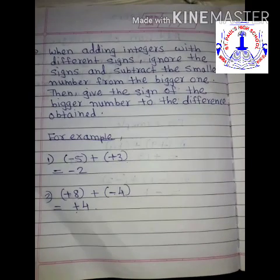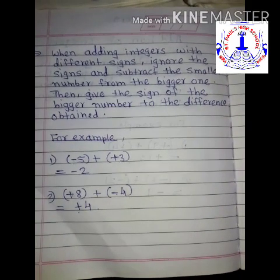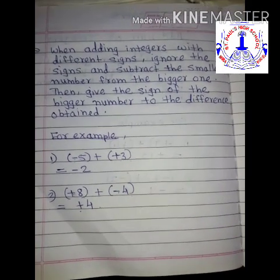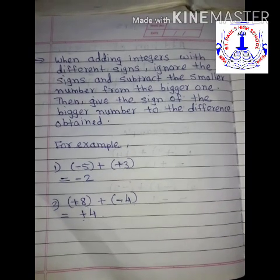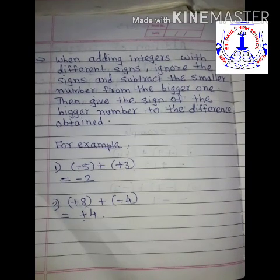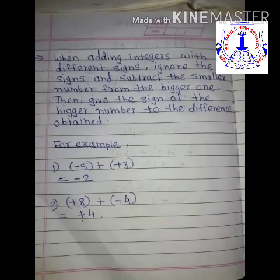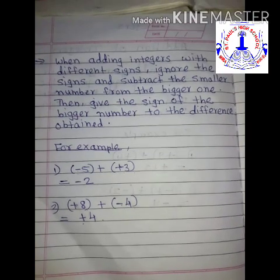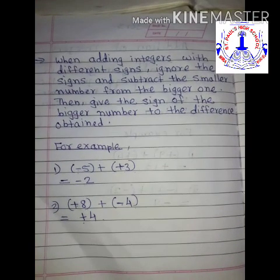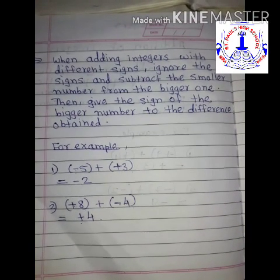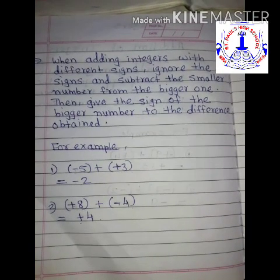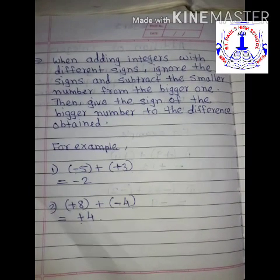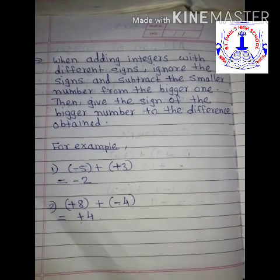Now we are going to start with the second rule for addition of integers. The rule is: when adding integers with different signs, ignore the signs and subtract the smaller number from the bigger one, then give the sign of the bigger number to the difference obtained.